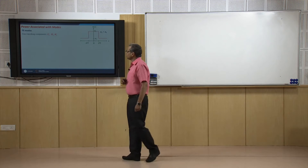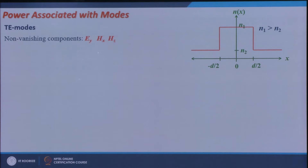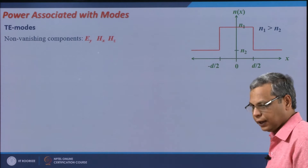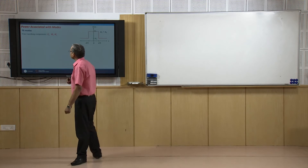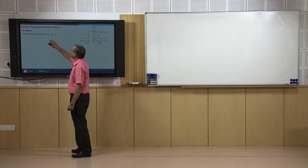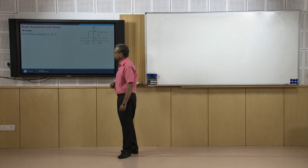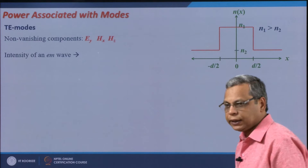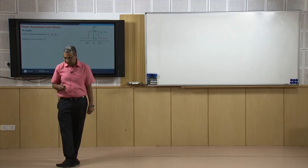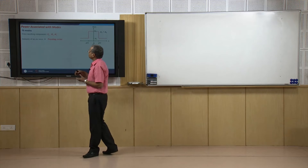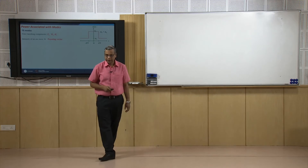We will do the analysis for TE modes. This is the refractive index profile of the waveguide we are talking about. For this waveguide, with propagation direction as z, the non-vanishing components of electric and magnetic field for TE modes are EY, HX, and HZ. We know that the intensity of an EM wave is given by the Poynting vector, so we need to find out what is the Poynting vector corresponding to these modal fields.